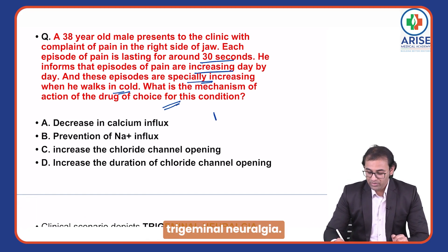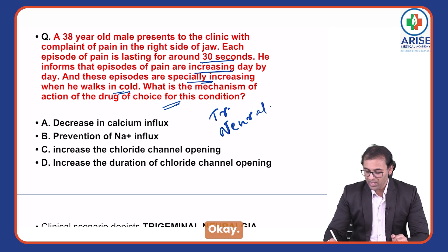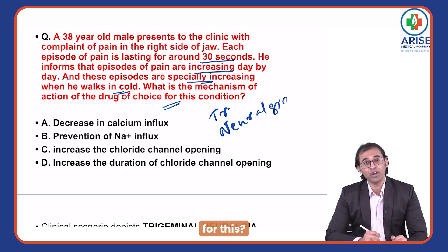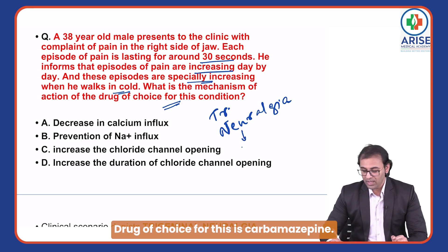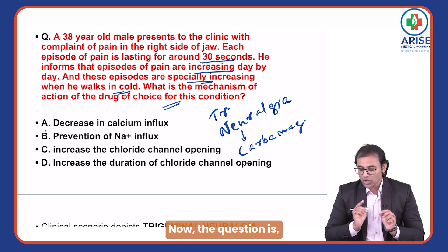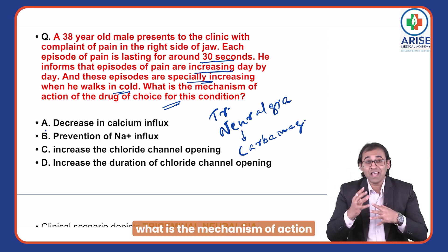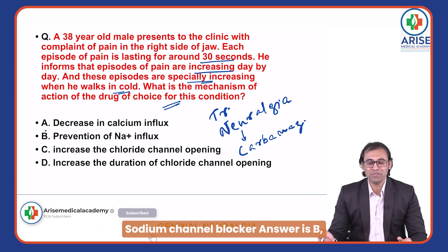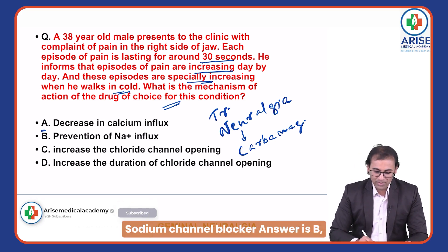The drug of choice for trigeminal neuralgia is carbamazepine. The mechanism of action of carbamazepine is sodium channel blockade — answer is B. Whenever you see a big clinical question, first diagnose the case, then identify the drug of choice, and then answer the examiner's specific question.